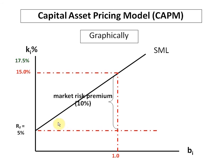Now let us also build in the information for our asset — the Federal Express share. The calculated expected return was 17.5% on that asset, and the beta of this asset is 1.25. The beta of FedEx's share is higher compared to the market, indicating that this asset is more risky than the market — that is why it has a higher beta. So when the risk is more, the return should also be more. The marketplace gives 15%, but if you choose to invest in FedEx stock, it can give you 17.5%.